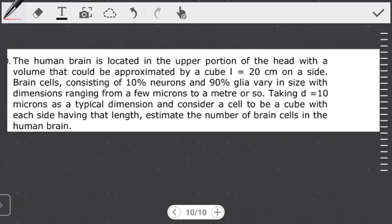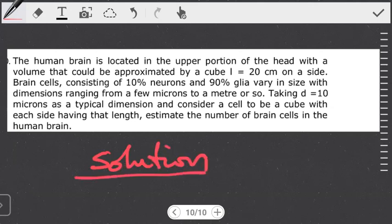This type of question will have a lot of information that might be helpful in how we work out this question, but also just details that are for our information. We have to be able to identify what is helpful in working out this problem and what is not. Paying attention to the key details, what we want to find — what the question is asking us to calculate — is an estimate of the number of brain cells.